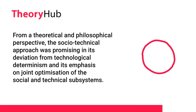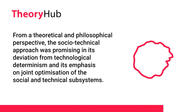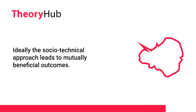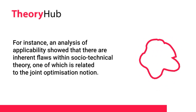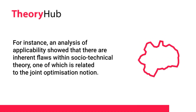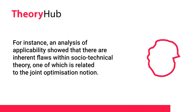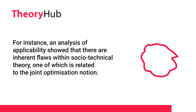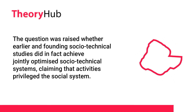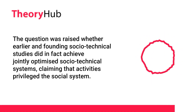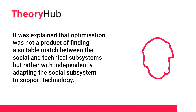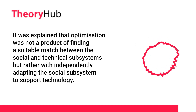From a theoretical and philosophical perspective, the socio-technical approach was promising in its deviation from technological determinism and its emphasis on joint optimization of the social and technical subsystems. However, according to critics, the theory initially failed to live up to its potential. An analysis of applicability showed inherent flaws, one of which is related to the joint optimization notion. The question was raised whether founding socio-technical studies did in fact achieve jointly optimized systems, claiming that activities privileged the social system — and that optimization was not a product of finding a suitable match between subsystems, but rather with independently adapting the social subsystem to support technology.